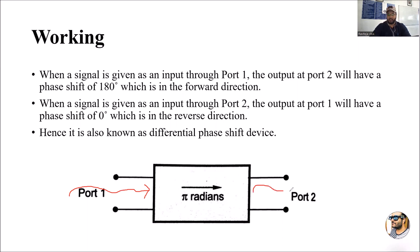The output achieved at port 2 will have a phase shift of 180 degrees — that is pi radians. Whatever signal comes as output through the gyrator will have a 180-degree phase shift. This is with respect to the forward direction, where input is given through port 1 and output is taken through port 2.